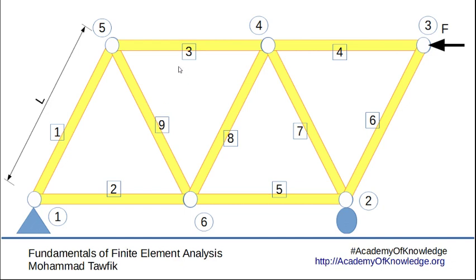For example, in the truss shown here, element number 8 is connected to node number 6 and node number 4. Node number 6 is already connecting elements 8, 9, 2, and 5, while node 4 is connecting elements 3, 4, 7, and 8. This will happen at every other node as well.